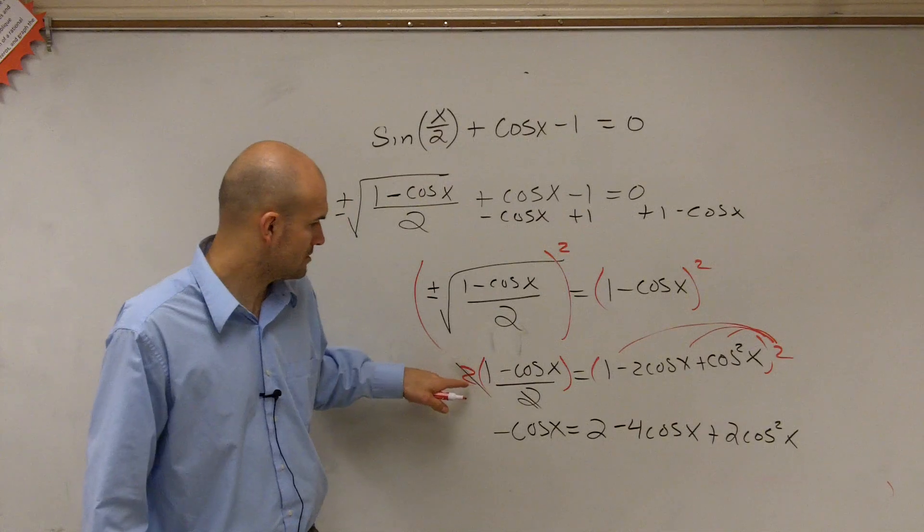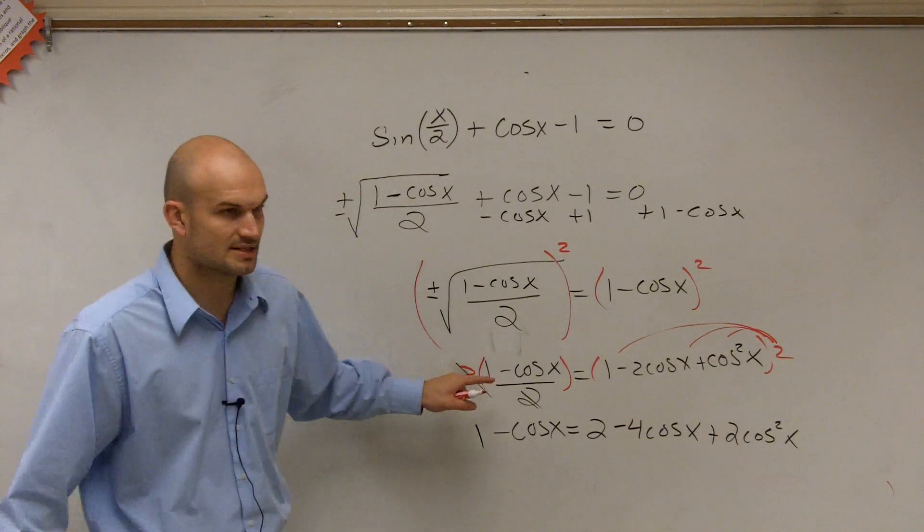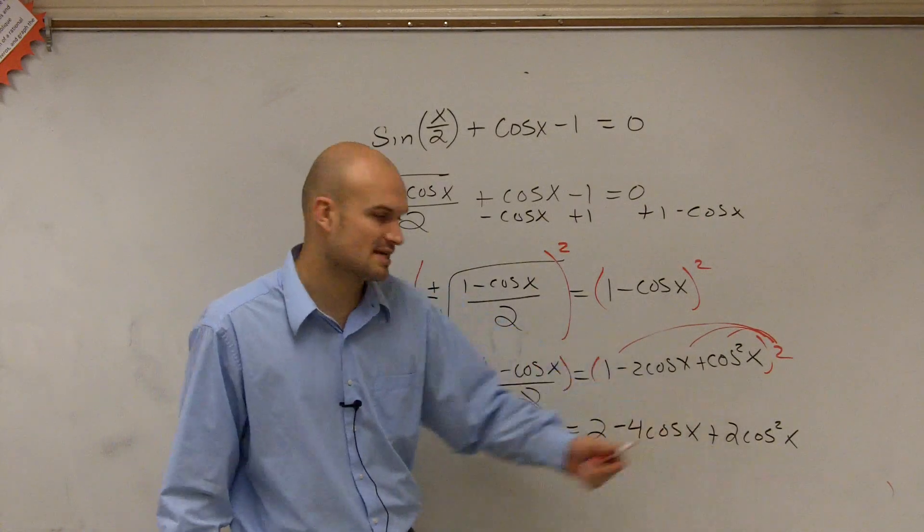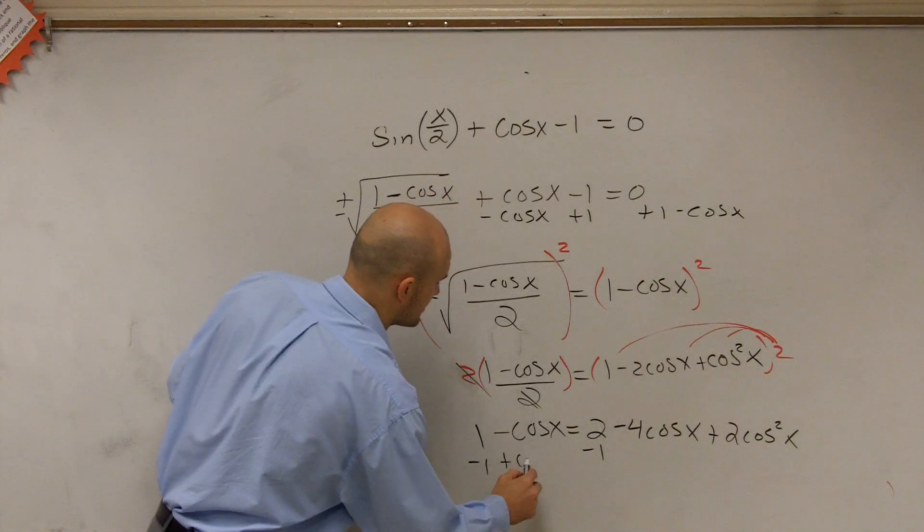On the other side, shouldn't it be 1 minus cosine of x? Oh, it should be 1 minus, yes. Yes, thank you. I missed that. So it's 1 minus cosine of x. So now let's get everything to the same side. So let's subtract the 1 on both sides, and let's add a cosine of x.